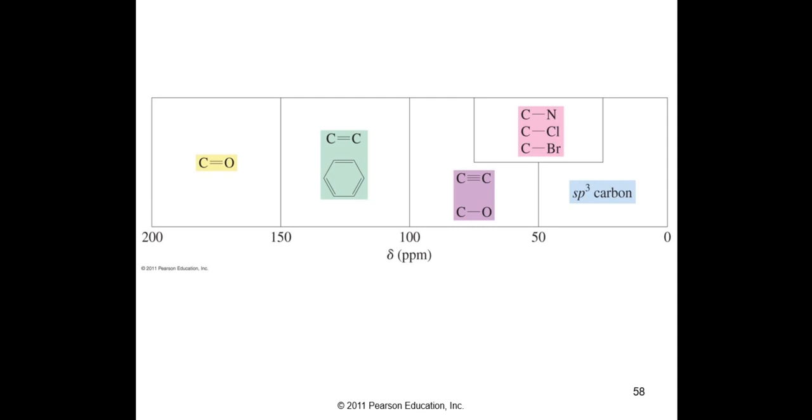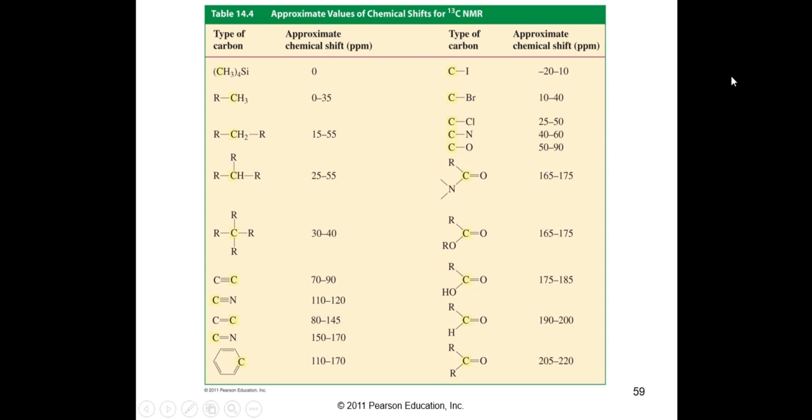In some cases, students learn C-13 faster than proton. A case can be built for introducing C-13 first. Here's a handy chart. Now, this is a type of chart we're going to be able to begin to apply. What we see in the upper left is your TMS at zero: methyl, methylene, methines, quaternary carbons. Steric compression causes these differences, actually.